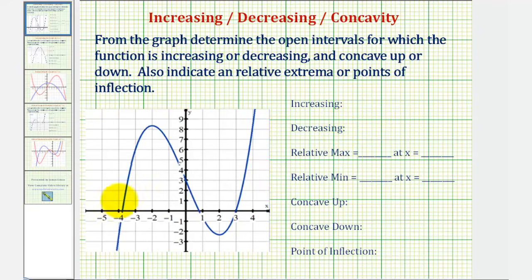The function is increasing if as x increases, y increases, and the function is decreasing if as x increases, y decreases. If we read the graph from left to right, if we're going uphill the graph is increasing, and if we're going downhill the graph is decreasing.